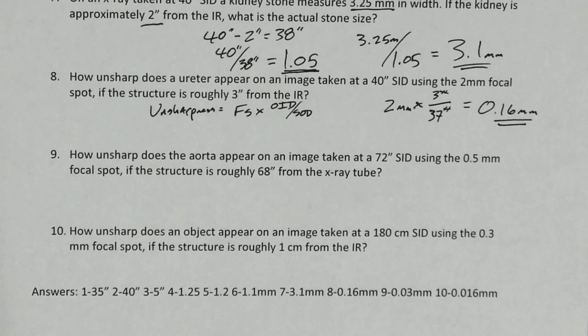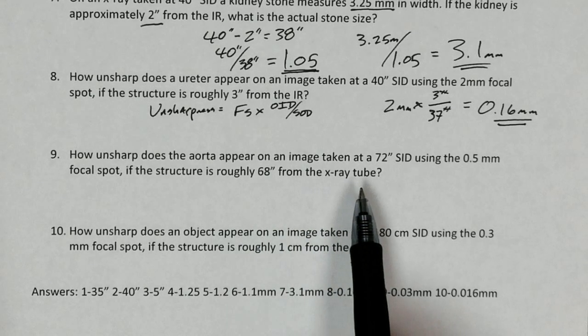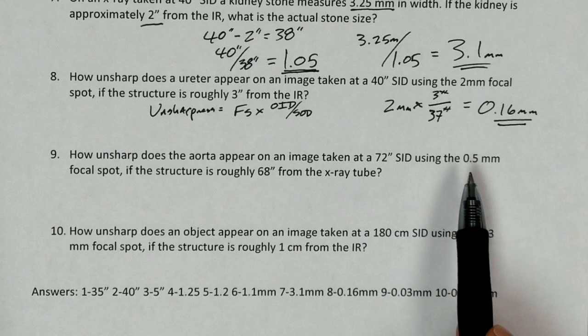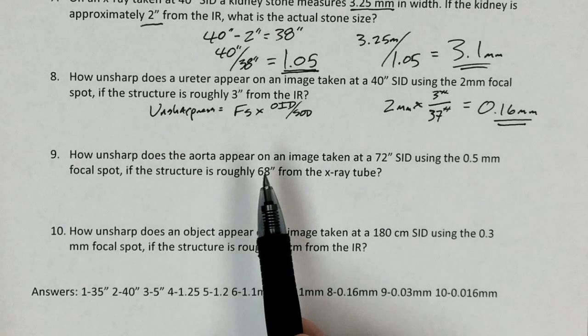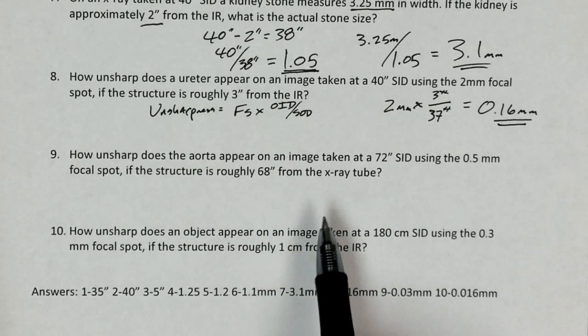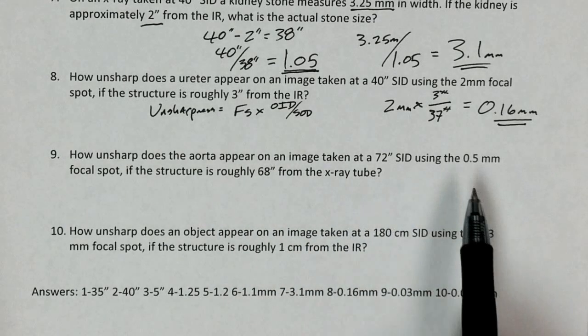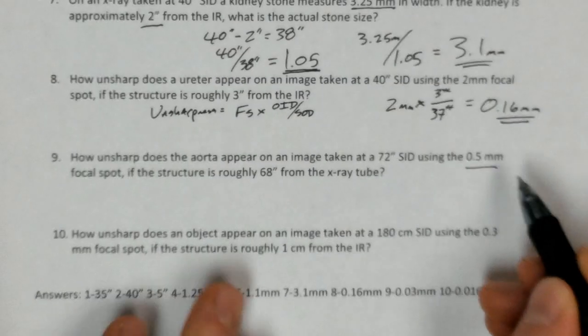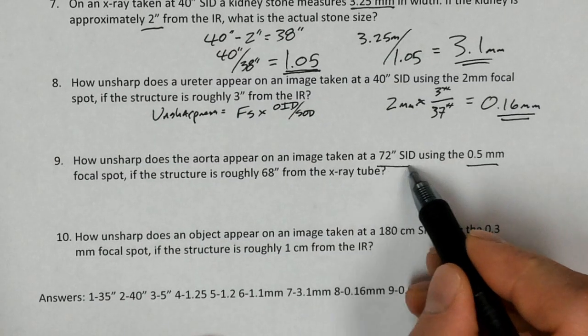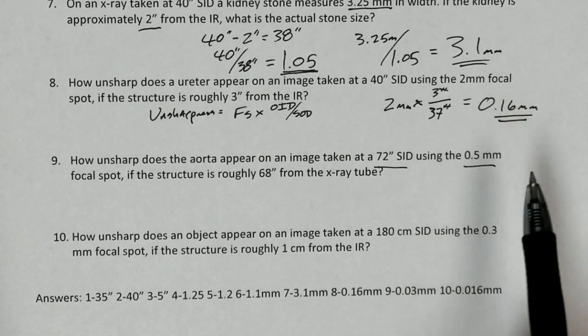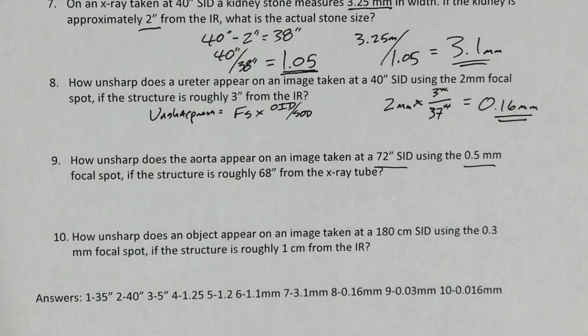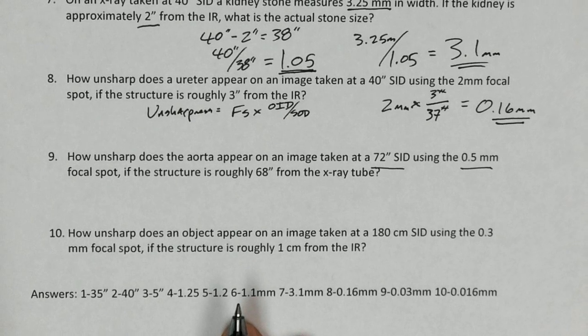So how unsharp does the aorta appear on an image taken at a 72 inch SID using a 0.5 millimeter focal spot if the structures are roughly 68 inches from the x-ray tube. And so this is a really good question to ask. You'll notice that we've decreased the focal spot size, and we've also increased the SID. And so this should improve the resolution. We should get a smaller number, in other words, less unsharpness because of the decreased focal spot size and the increased SID.